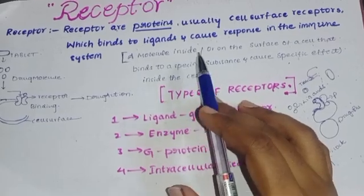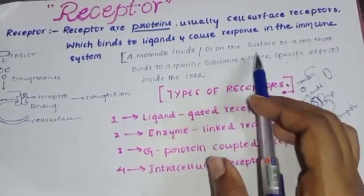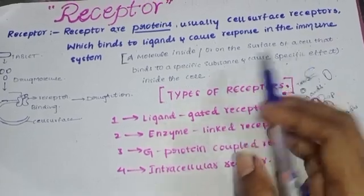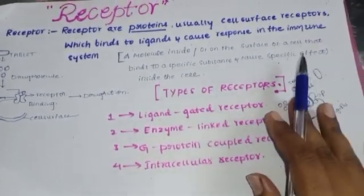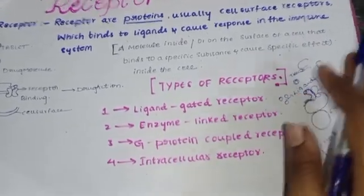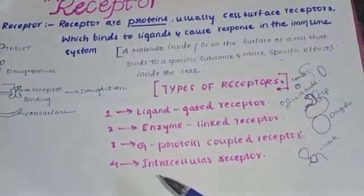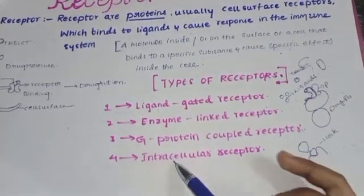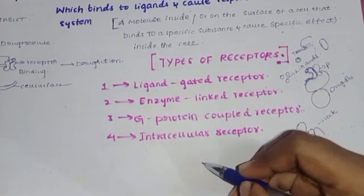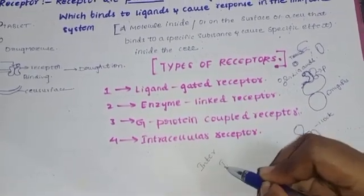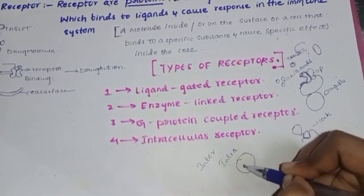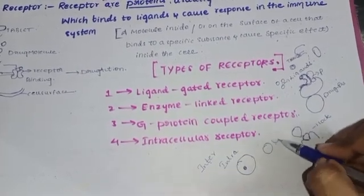A receptor is a molecule inside or on the surface of a cell that binds to a specific substance and causes a specific effect inside the cell. So receptors can be inside the cell — intracellular — or on the surface. There are four types of receptors. Intracellular receptor: intra means inside. Remember, intra is inside the cell; inter is between cells.